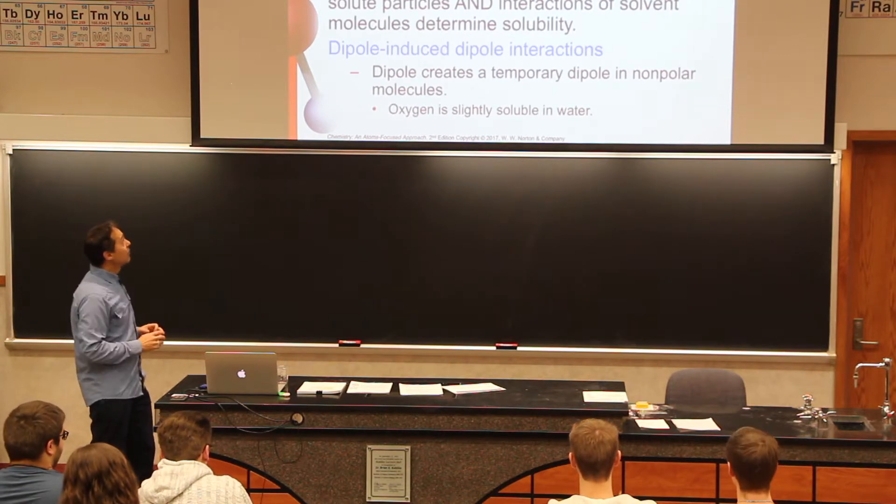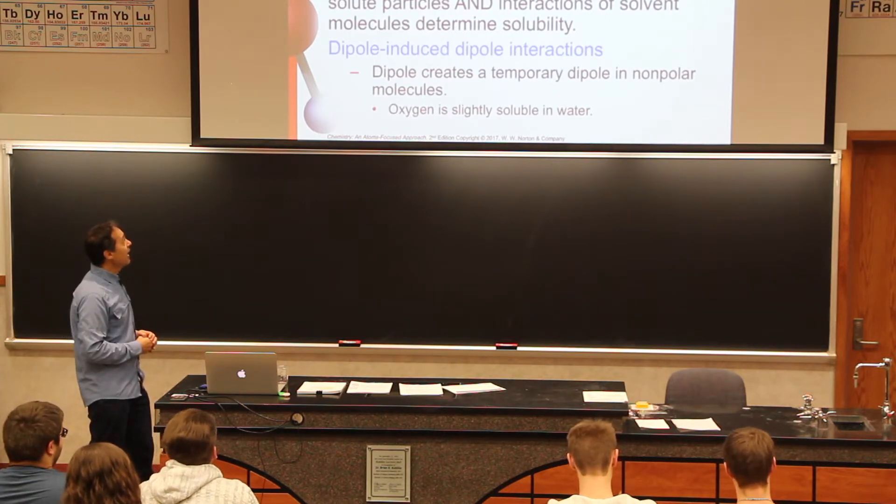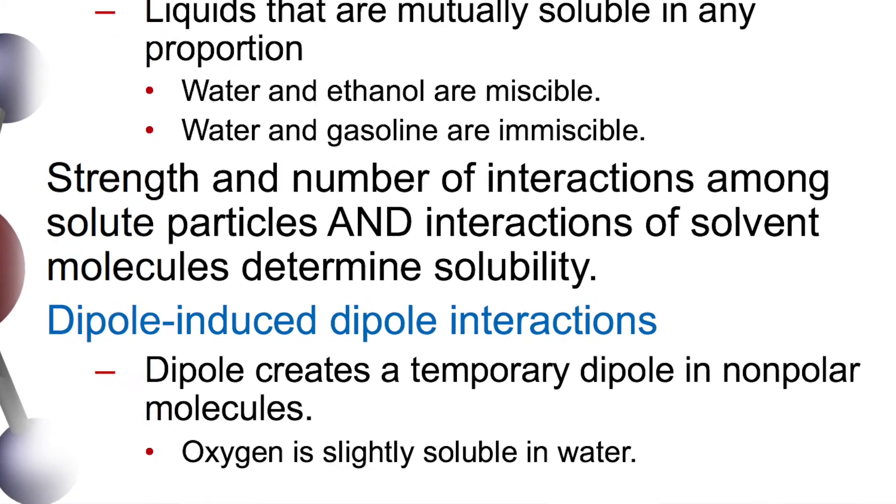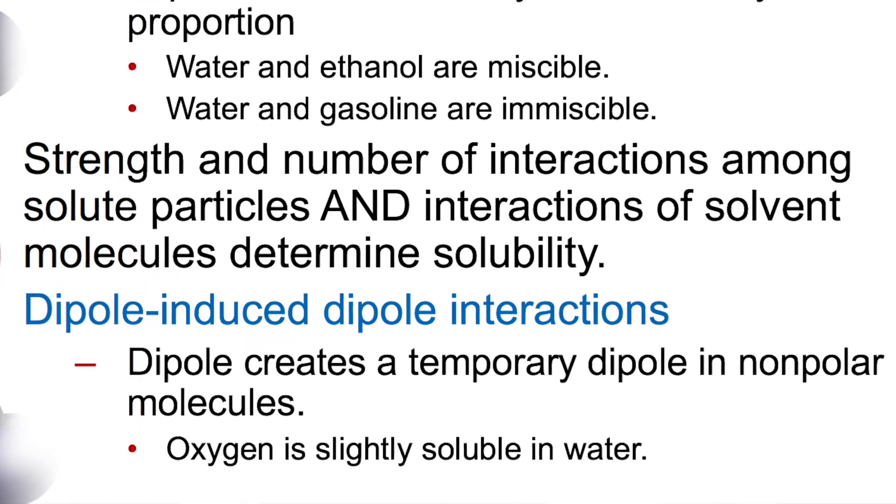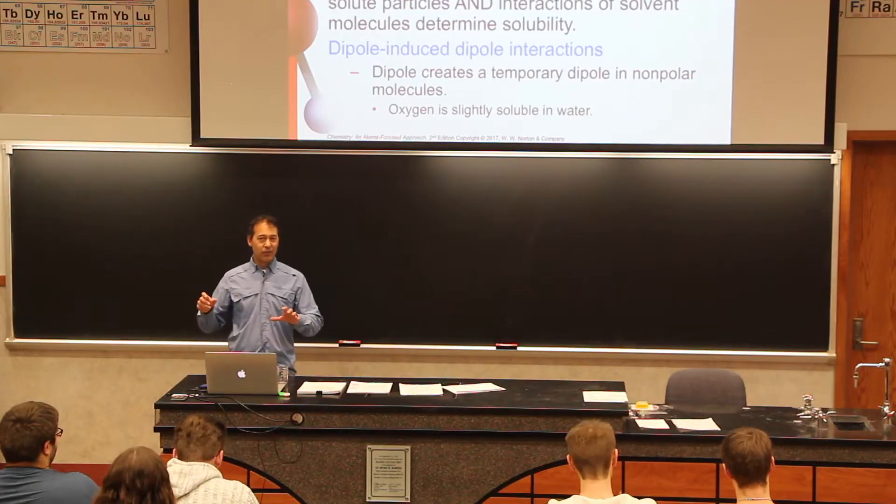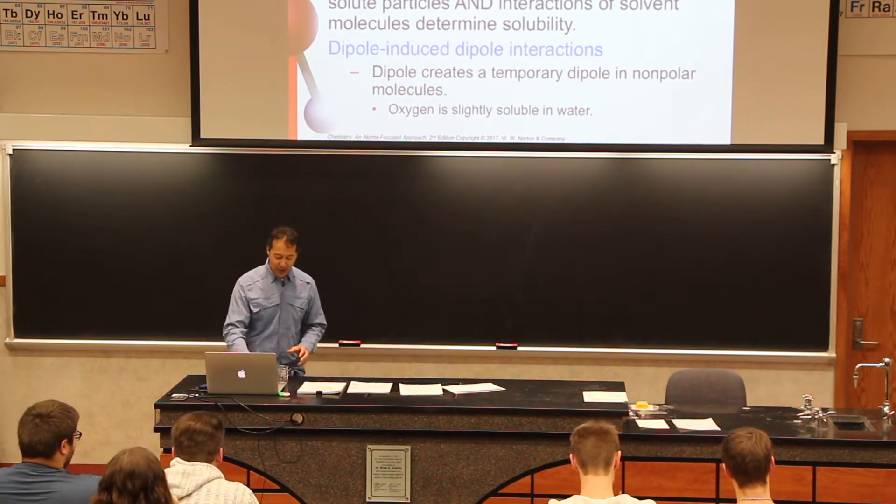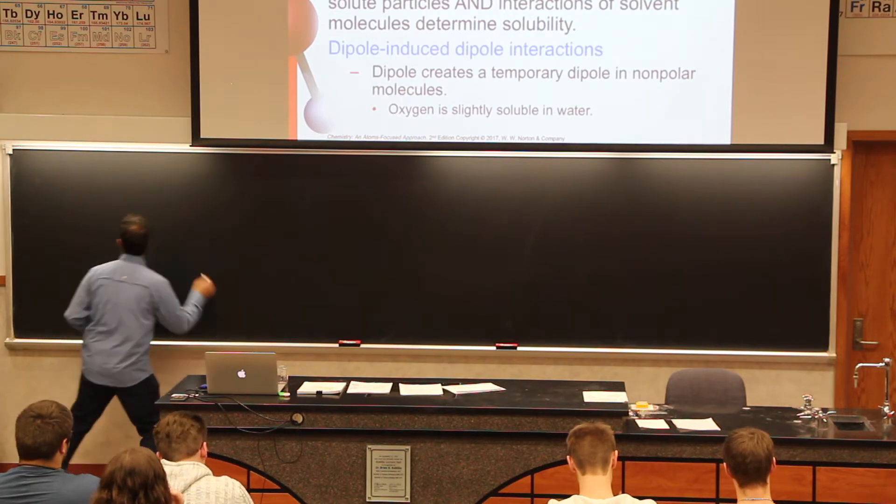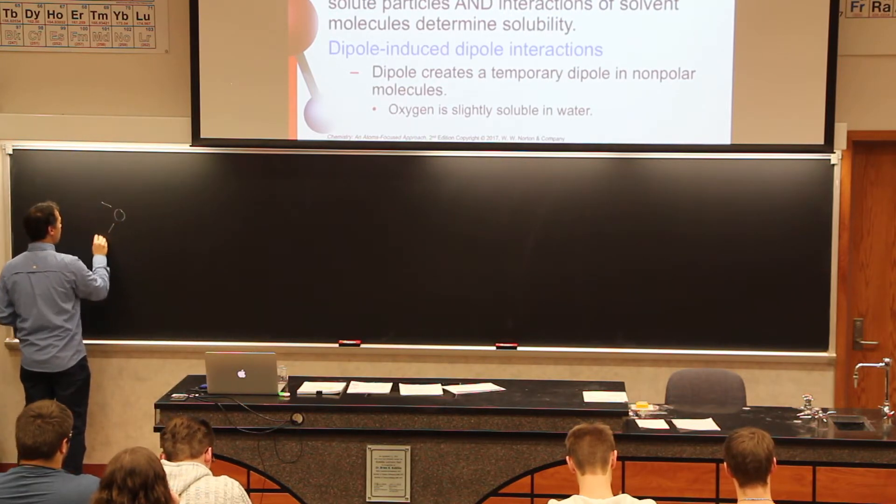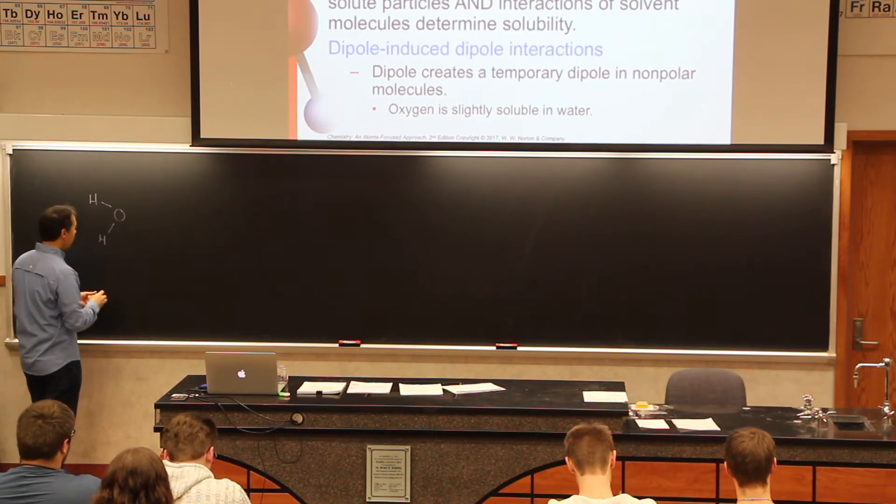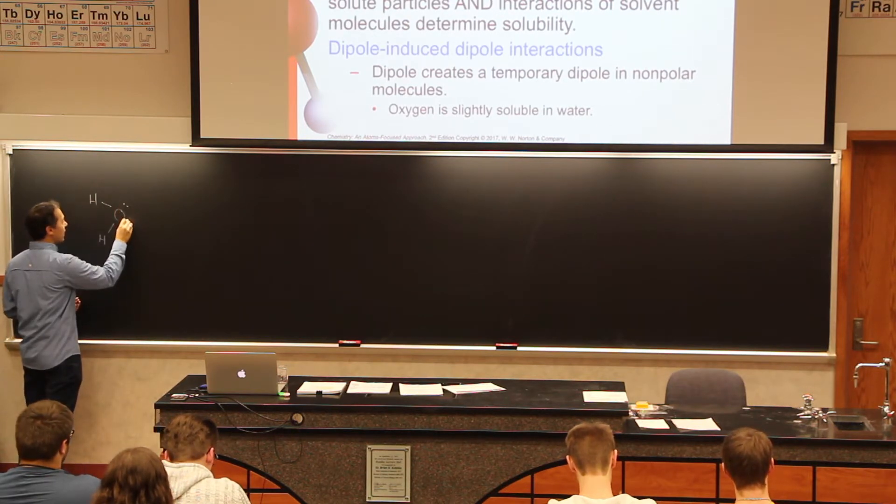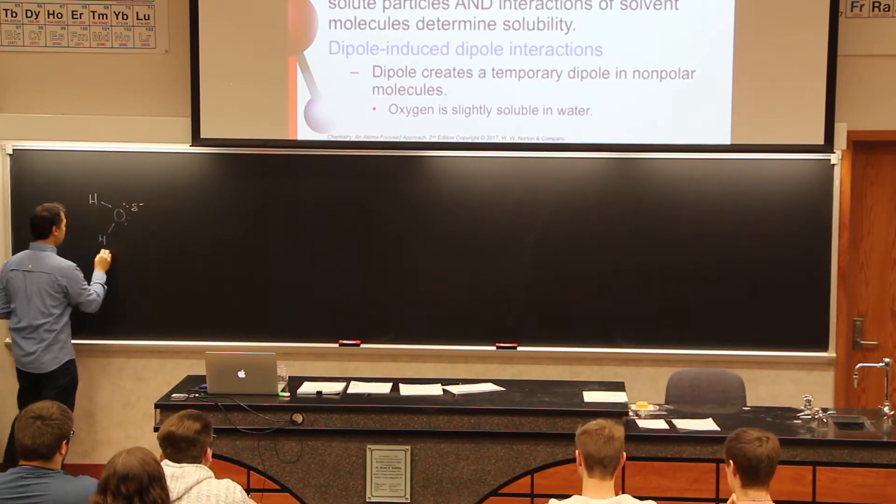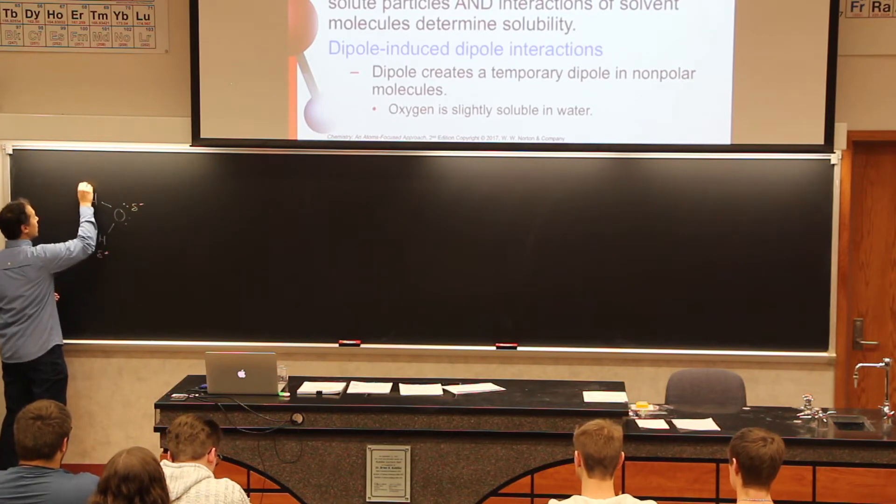There's something else that happens when we mix things together. We can have what we call a dipole-induced dipole interaction. This is where we can have something that's polar make something that's not polar a little bit polar. That's kind of weird to wrap our heads around. If you have a water molecule, a water molecule has an oxygen and a hydrogen like this. We say that these oxygen atoms are electronegative, so they pull the electrons towards themselves and become electronegative. The hydrogens become electropositive like this. This is a polar molecule.